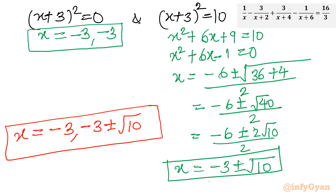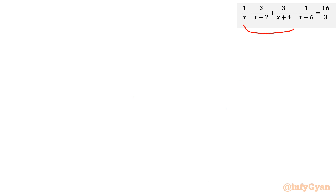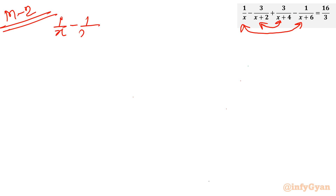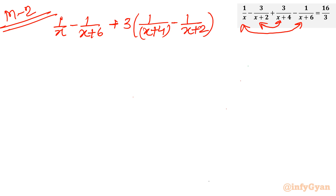Now method number 2. I won't use any substitution. I will group the first and last terms together, and the middle two terms together. So I write 1 over x minus 1 over x plus 6, then plus 3 common times 1 over x plus 4 minus 1 over x plus 2, equal to 16 over 3.